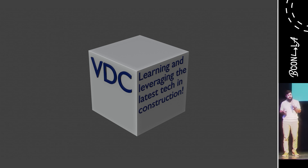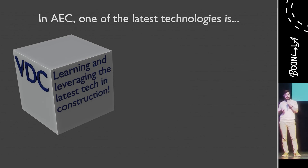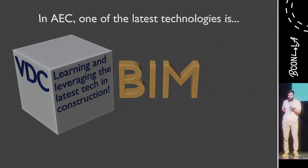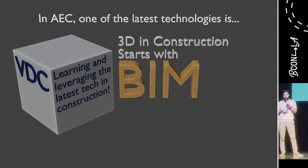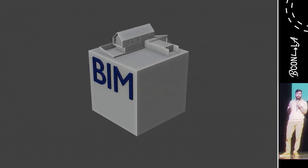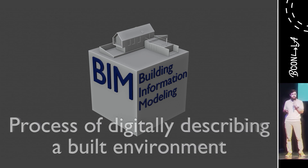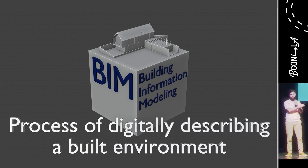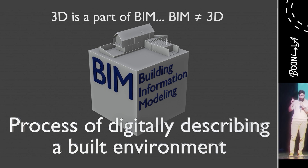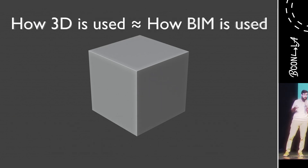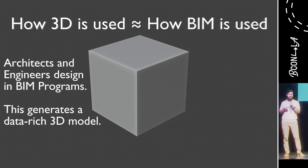This is a tall task because in construction, adoption of new technology just takes a lot longer. In architecture, engineering, and construction, one of the latest technologies is the BIM process. BIM is where 3D and construction met and continue to develop their relationship today. BIM stands for Building Information Modeling. Simply put, it is the process of digitally describing a built environment. 3D geometry is only one aspect of BIM since it's ultimately just a database describing our built environment, but BIM is often thought of as just 3D information even if that's a limited understanding.